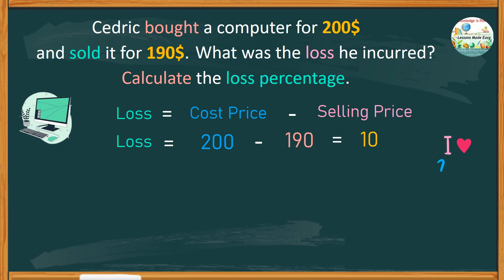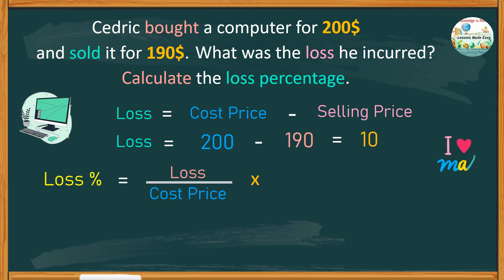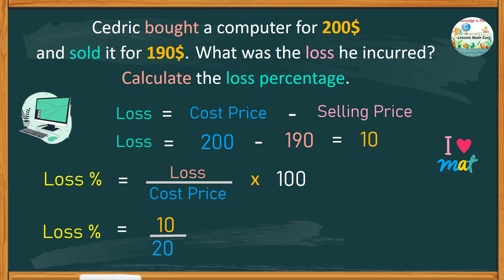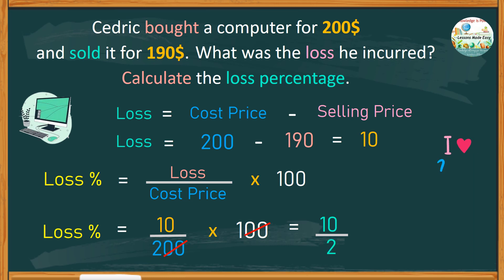To find the loss percentage, we take the loss incurred over the cost price times 100. So the loss percent equals $10 over $200 times 100. Cancel the two zeros above, and do the same with the two zeros below. So now we have 10 over 2, or 10 divided by 2, which is 5. So the loss percent is 5%.